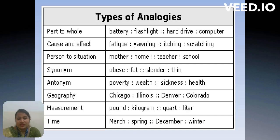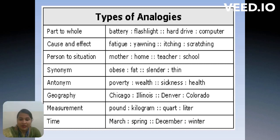Geography analogies: Chicago is to Illinois, Denver is to Colorado — showing how a city is related to its state or country. Measurement: pound, kilogram, quarter, litre. Time: March is to spring, December is to winter — showing how seasons match the months.